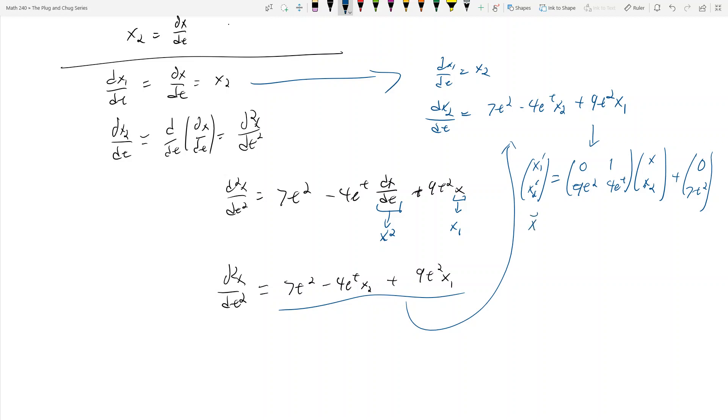So this is the system that you end up getting. This is x prime equals Ax plus b. We usually don't really deal with equations like, or like systems like this. There's a chapter in 9.6 that talks about a variation of parameters method where you can solve like a particular solution or something like that, where you can deal with the b. This usually doesn't come up.